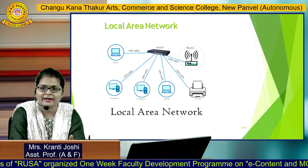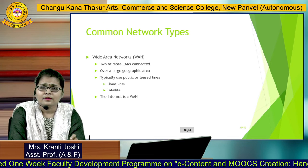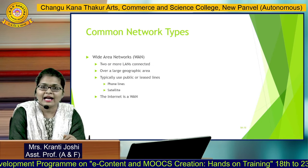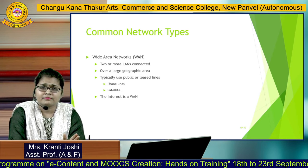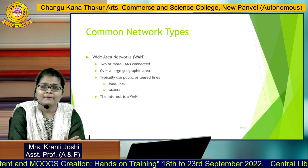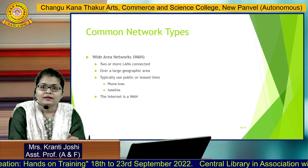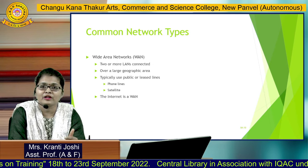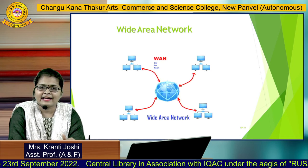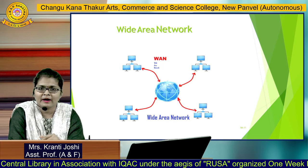The next type is WAN — Wide Area Network. In a WAN, two or more LANs are connected. It operates worldwide over a large geographical area. It typically uses phone lines and satellites. The most famous example of a WAN is the internet. As shown in the diagram, multiple LANs are connected into the wide area network.